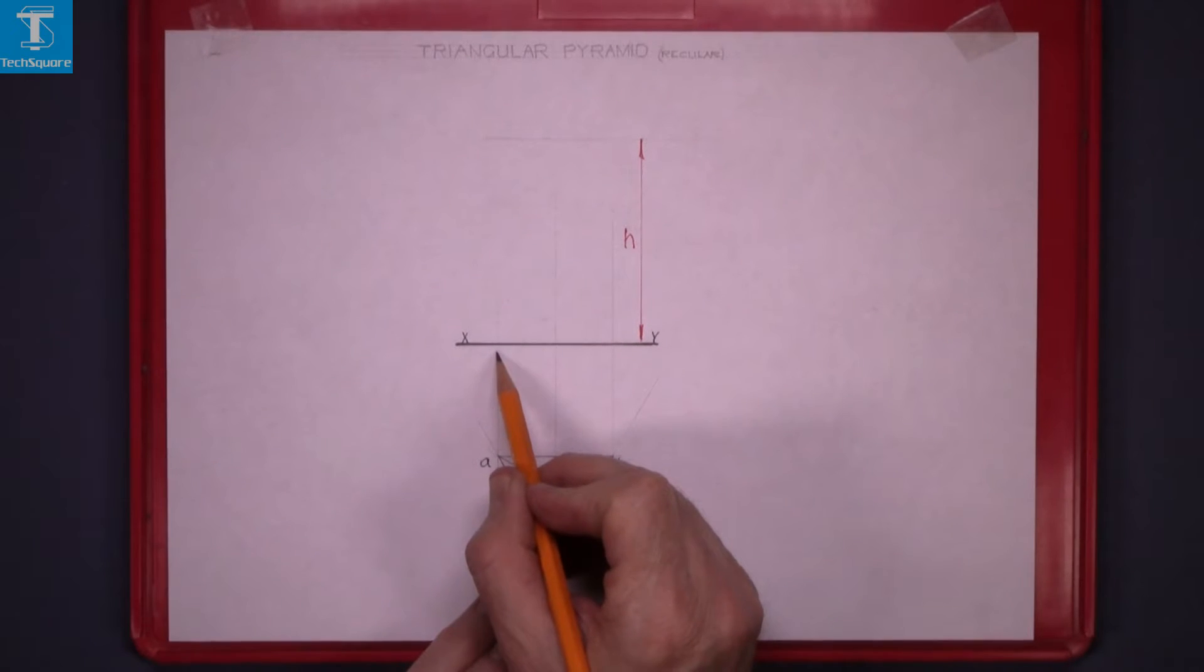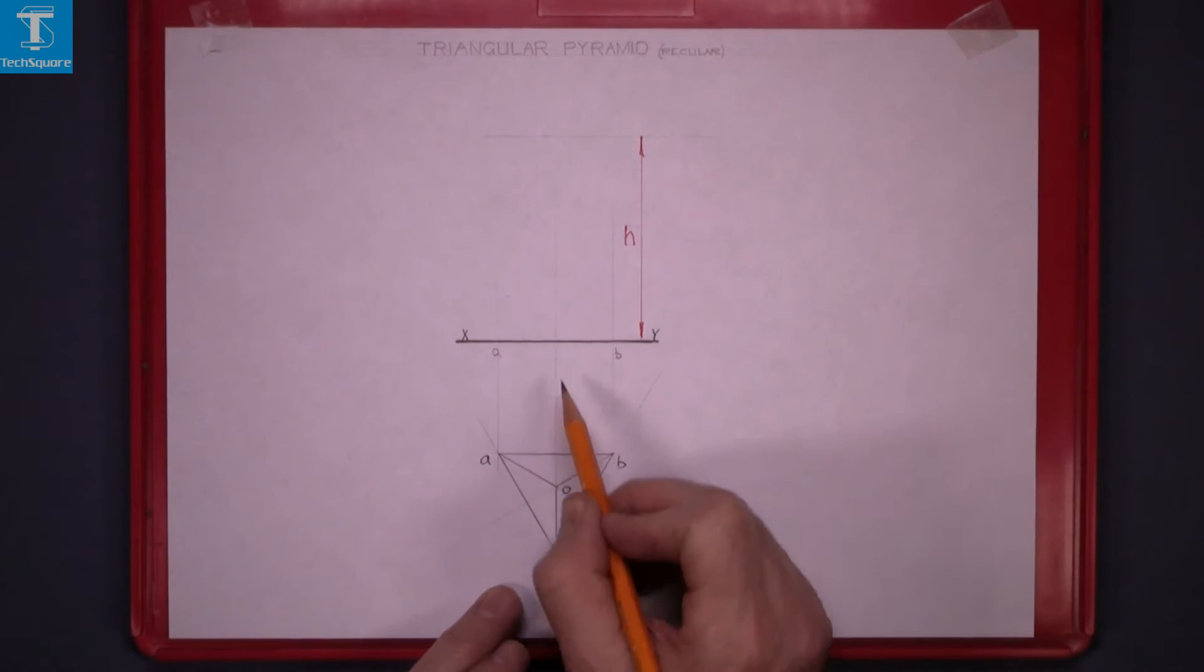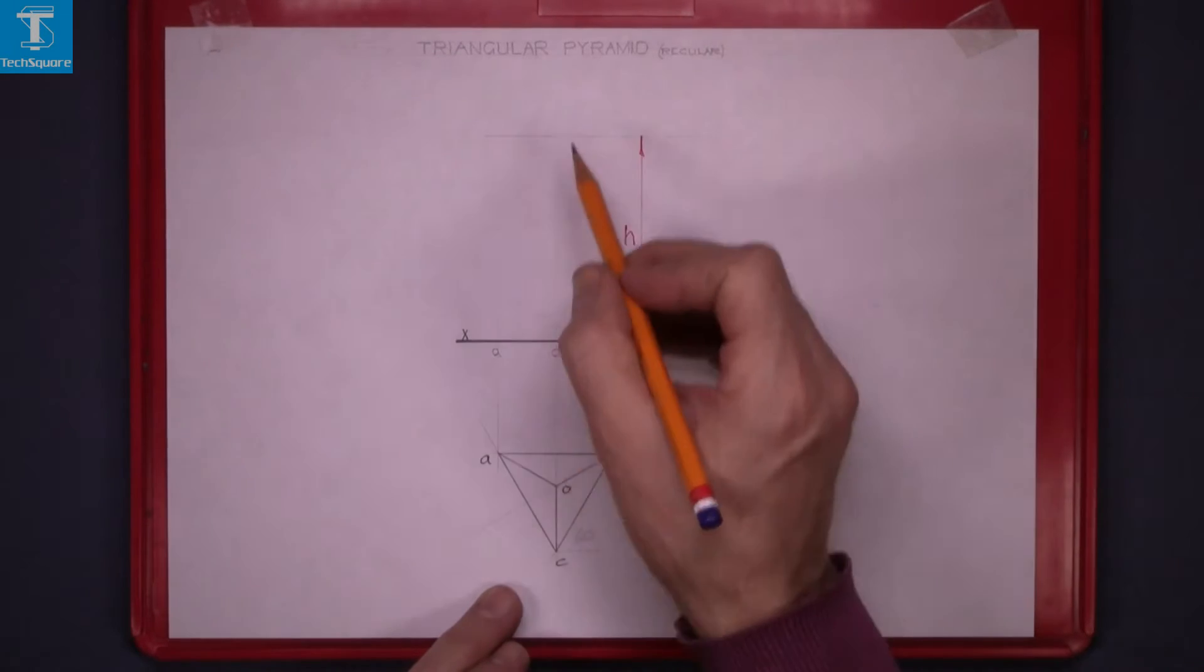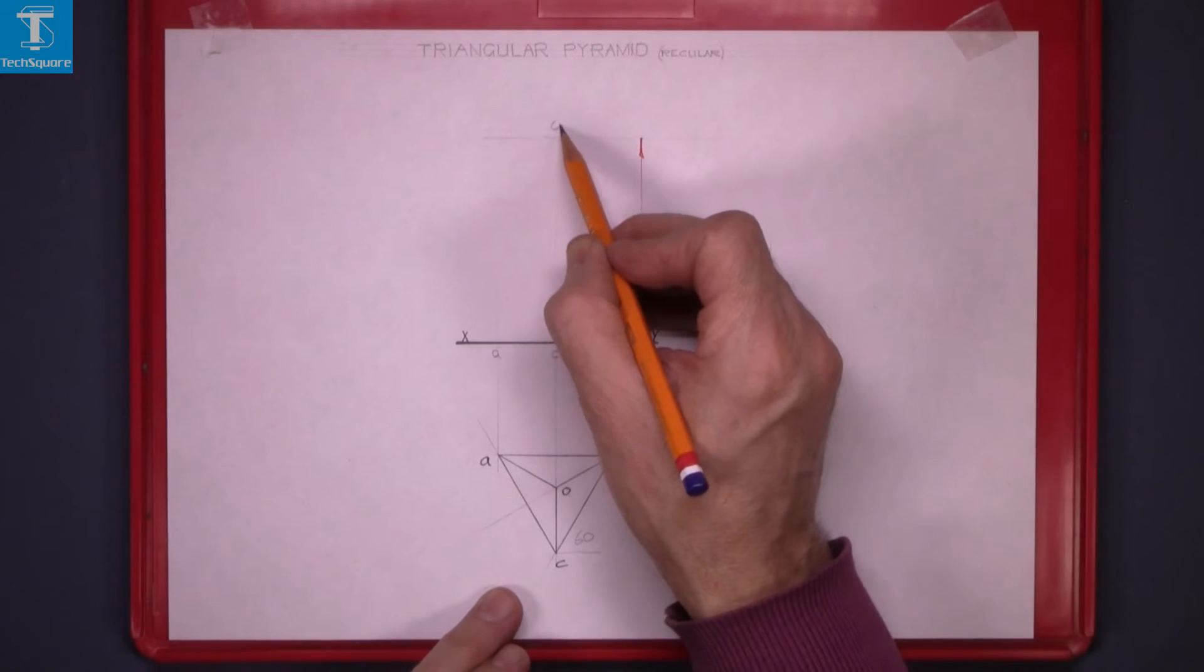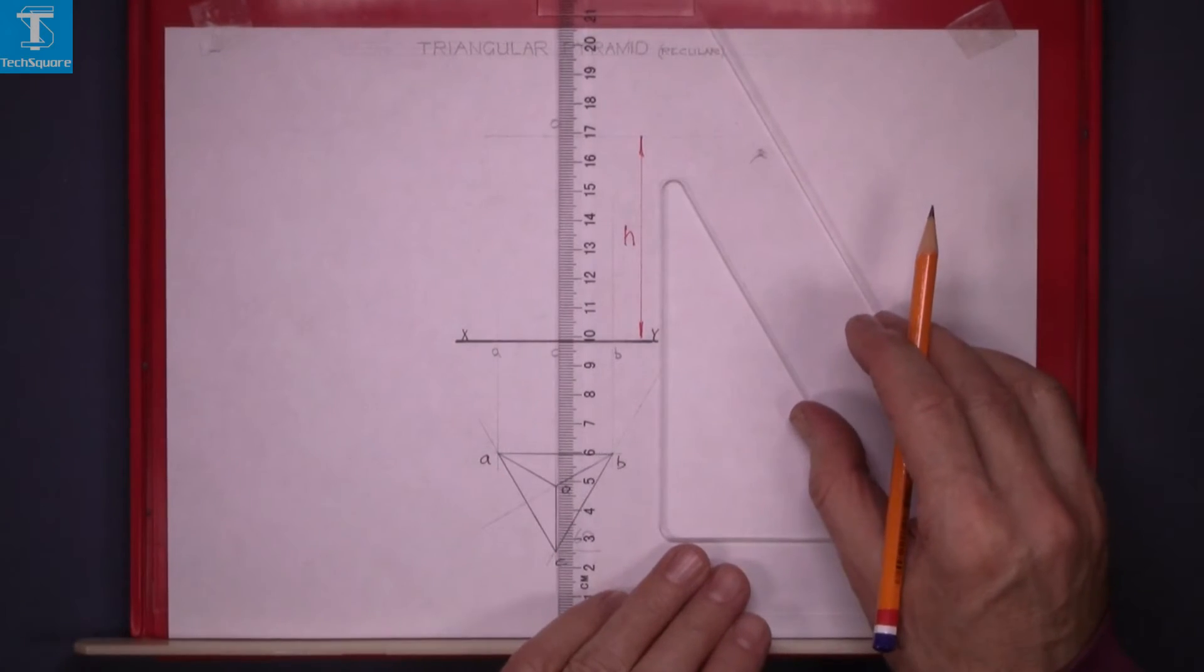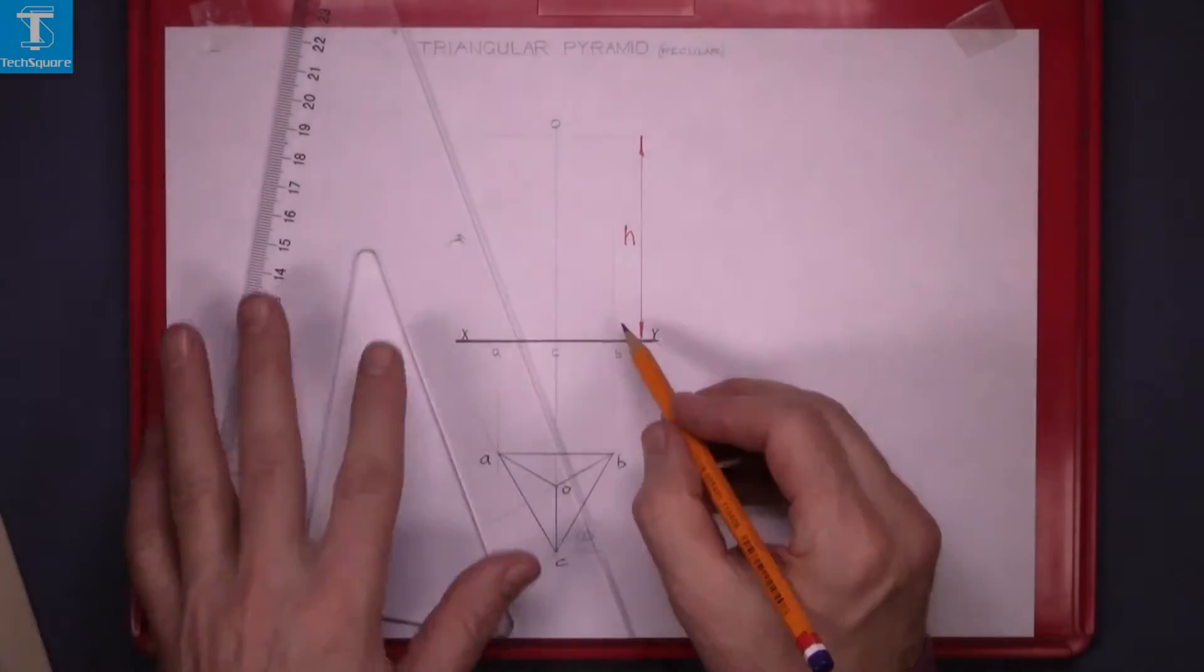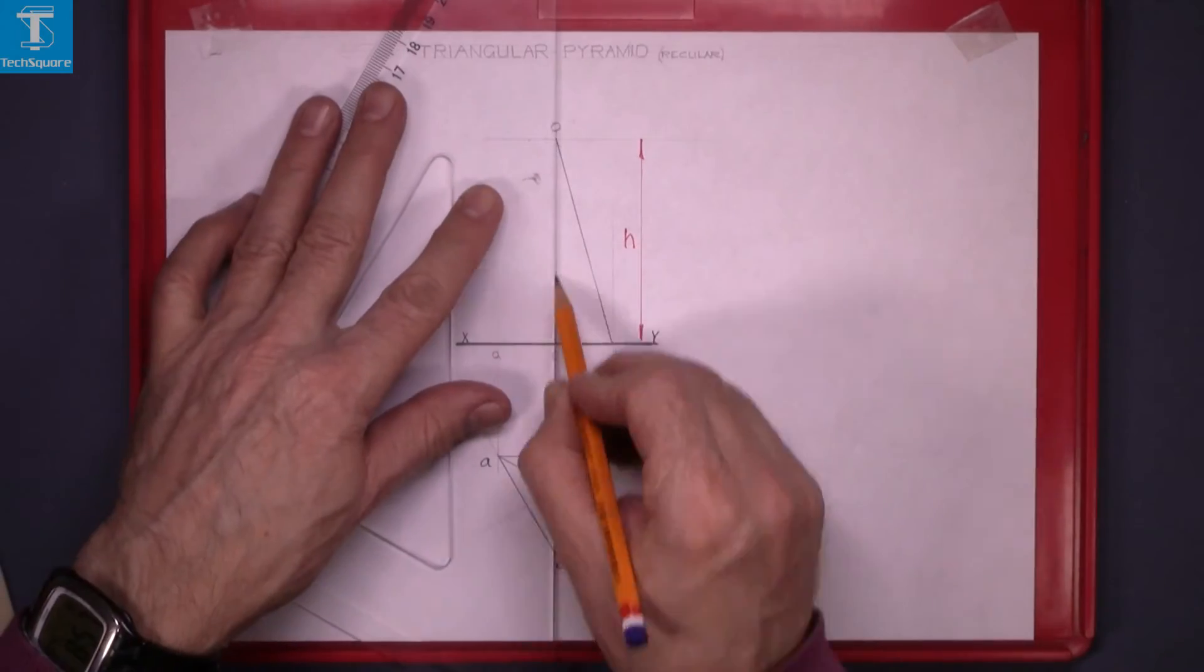Point A is on the ground, B, and C, and point O up at the top. Bring O up to where it is there and then join the points to the top.